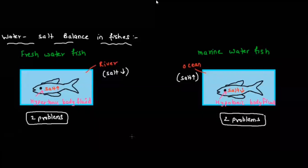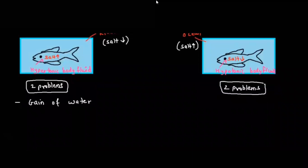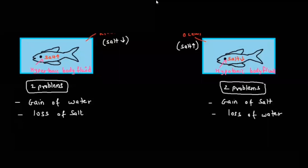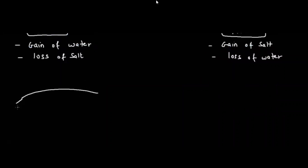Freshwater fish face two problems: gain of water (water keeps entering by osmosis) and loss of salt. Marine fish face the opposite: gain of salt and loss of water. Both have developed specialized mechanisms to deal with these problems so they can drink water and eliminate excess salt without dying.